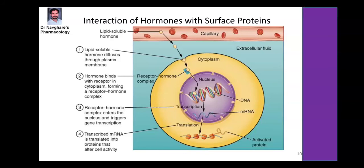General mechanism of hormone action: when hormones are in blood circulation, they are transported towards cells. In the cytoplasm, hormones bind with a receptor and form a receptor-hormone complex. From the cytoplasm, this complex enters the nucleus and triggers the gene transcription mechanism. After transcription, mRNA is produced and a specific protein is synthesized, which is then used for the action of the hormone.